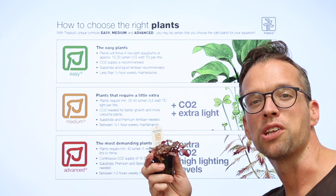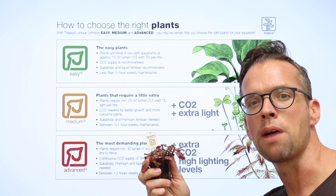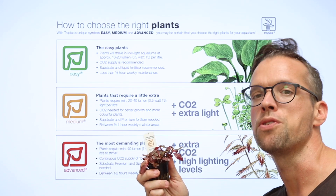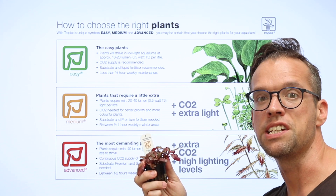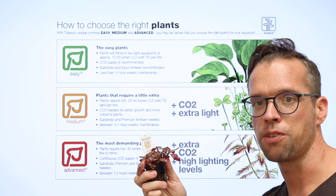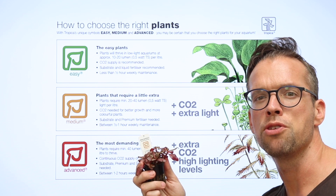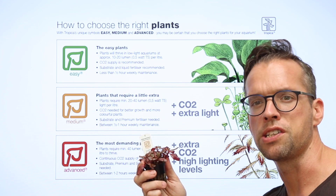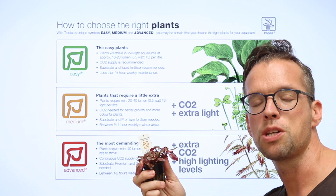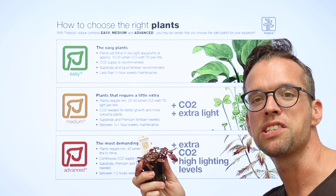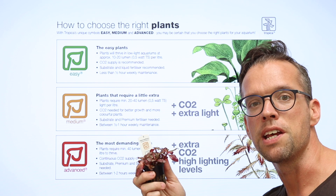Medium plants require more light to thrive, typically twice the amount when compared with easy plants. CO2 injection is needed for the healthiest growth, with a substrate or soil and premium nutrition liquid fertilizer to ensure the plants are well fed. Typically weekly maintenance time will be around 30 to 60 minutes.